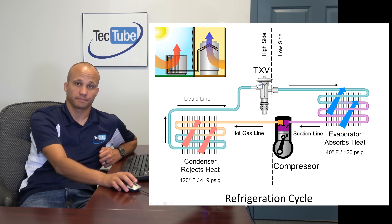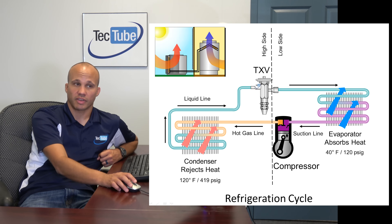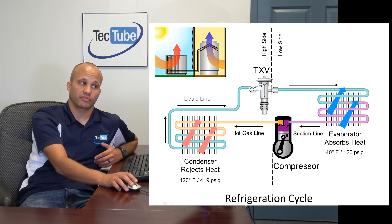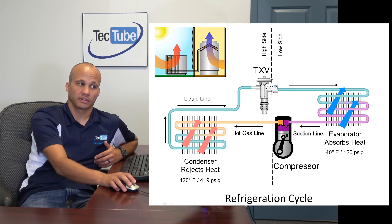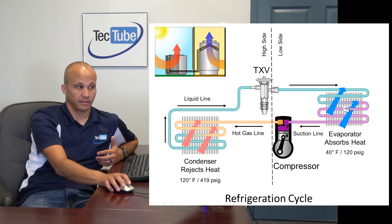The refrigerant condenses back to a liquid, which is why we call this the liquid line, and it travels over to the TXV. TXV stands for thermal expansion valve — it's a metering-type device. Older systems had fixed orifices or pistons; nowadays almost everything has a TXV. Its job is to meter the refrigerant as it enters the evaporator and to change the pressure from high back down to low, since it's the opposite of the compressor. Then the refrigerant goes back into the evaporator coil at lower pressure, where it can begin absorbing heat again. That's the basic refrigeration cycle.